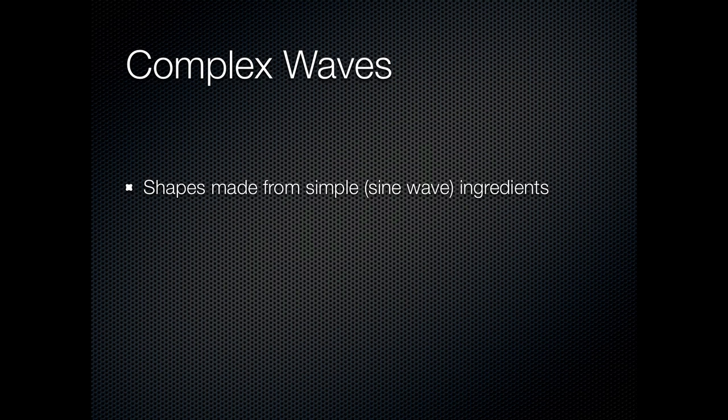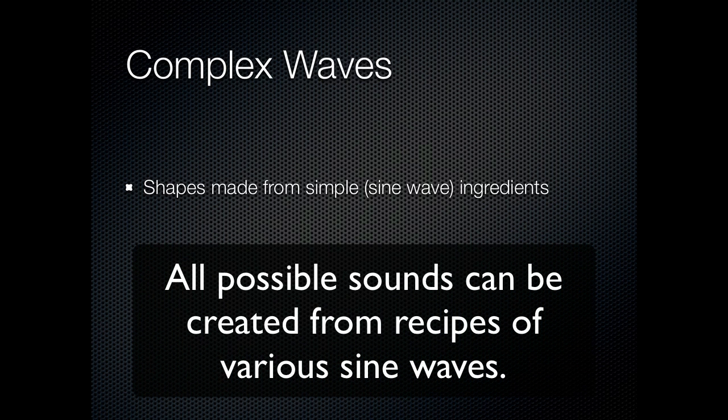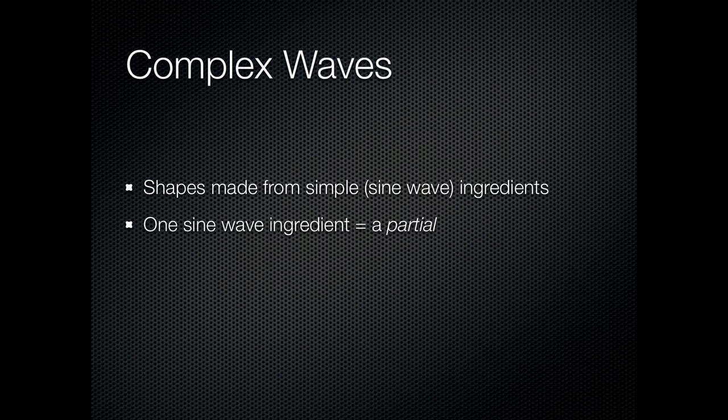In general, a complex wave is any wave shape made from more than one simple sine wave. There's more to this than it might sound like, and we'll get to that in a moment. We're going to call one single sine wave ingredient a partial.